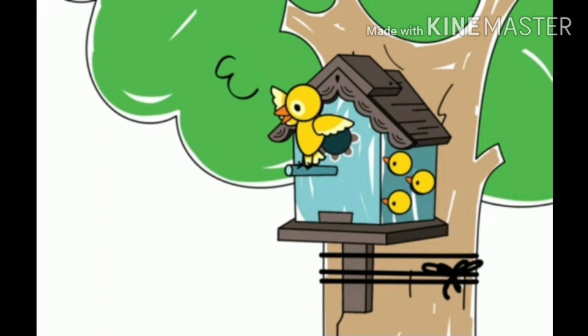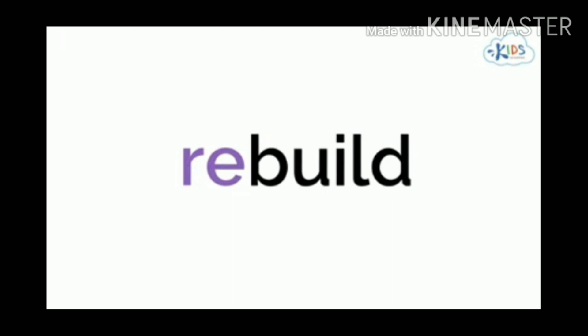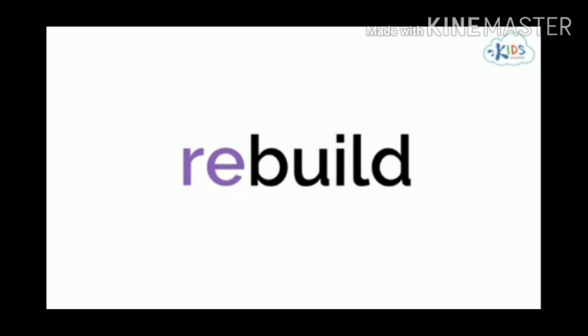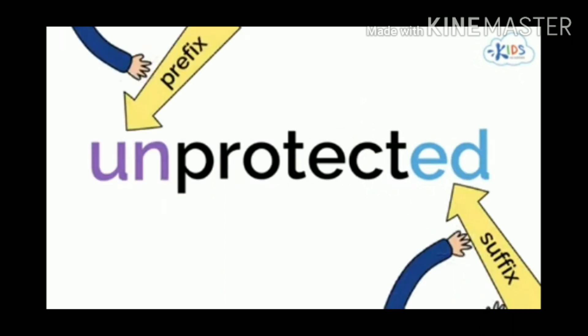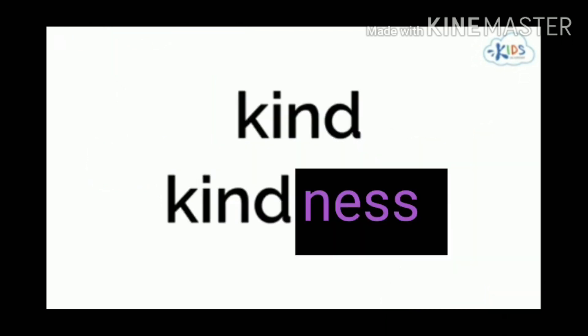So children, there are some words with prefixes and suffixes in this story. For example, the word 'rebuild' where 're' is the prefix and 'build' is the base word. For 'protection,' '-ion' is the suffix. And 'unprotected' has a prefix as well as a suffix. Same goes for the word 'kindness.'